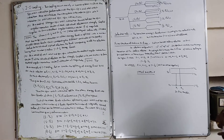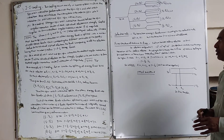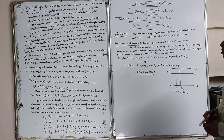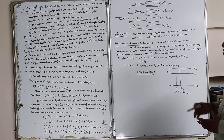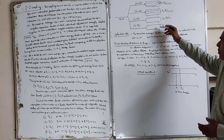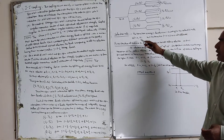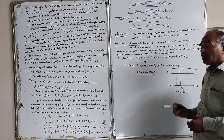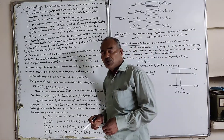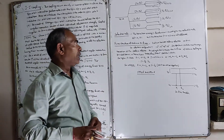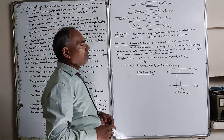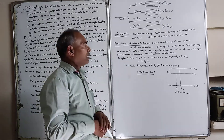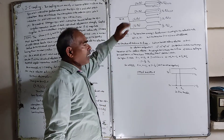These 12 j-value levels can be used for transitions according to the selection rule: delta j equals 0 or plus/minus 1, but the transition j equal to 0 to 0 is not possible. So we must keep this selection rule in mind when determining allowed transitions.